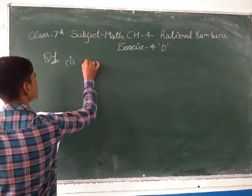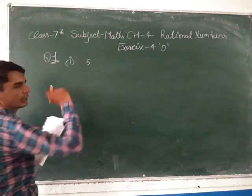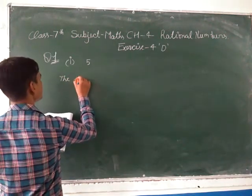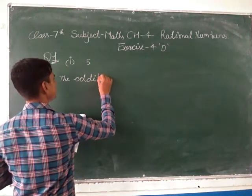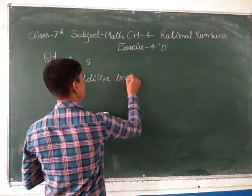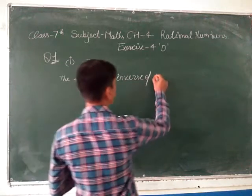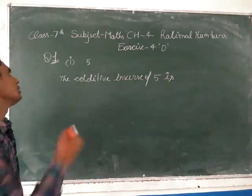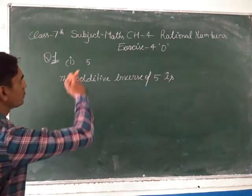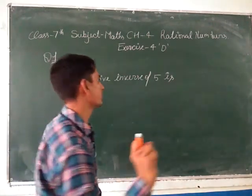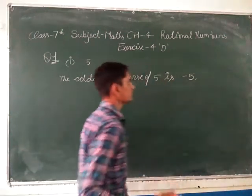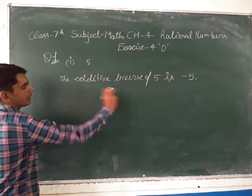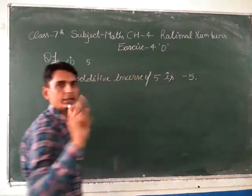So the first part: what is the additive inverse of 5? When we write the additive inverse of a positive number, we write the negative number. So the additive inverse of 5 is minus 5. What we write about a positive number is its negative number.